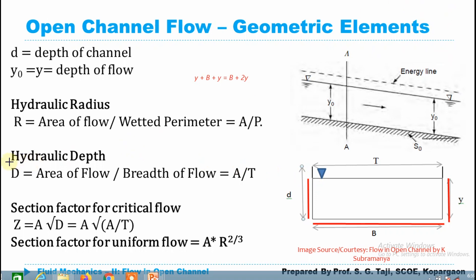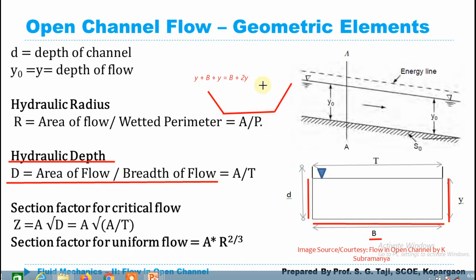The hydraulic depth is the ratio of the area of flow to the top width T of the flow. Remember that in a trapezoidal or triangular channel, the top width T and the bottom width B are different — the bottom width is slightly less than the top width. In a rectangular channel both are the same. The surface of the liquid defines the top width. So hydraulic depth = A / T. Remember the difference: hydraulic radius = A / wetted perimeter, and hydraulic depth = A / top width T.